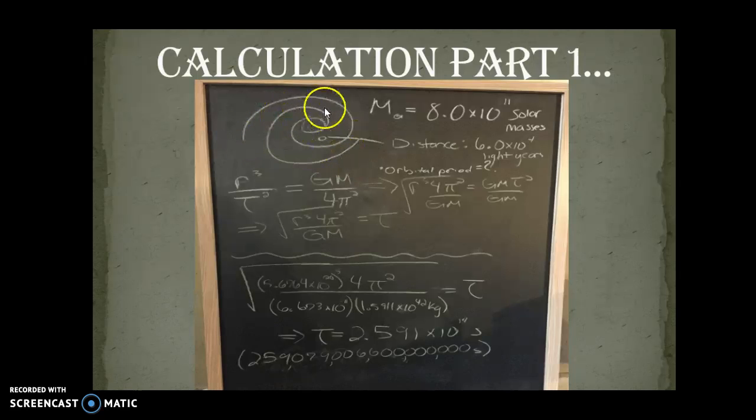Here's my diagram of the galaxy with a little star, of course it's not drawn to scale. The distance is 6.0 times 10 to the 4th light years. I ended up converting that to 5.6764 times 10 to the 20th meters. The mass of the galaxy is 8.0 times 10 to the 11th solar masses, which I also had to change into kilograms.